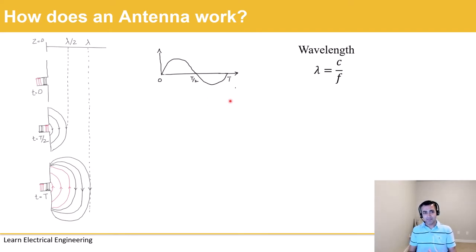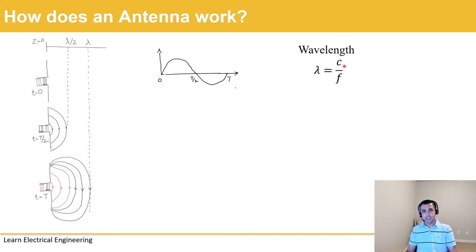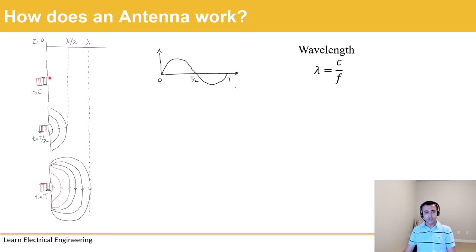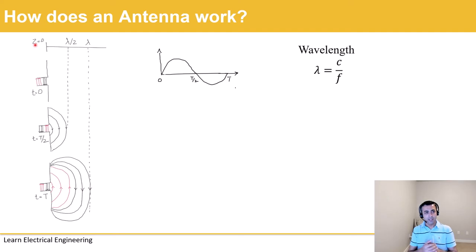A dipole antenna is a pretty common antenna and generally the first antenna you study in any antenna and propagation course. The dipole antenna has two wires, each with a length of a quarter wavelength. Wavelength is the speed of light divided by the frequency — electromagnetic waves travel at the speed of light, so dividing by frequency gives the wavelength in meters. In this example, at time zero, all the electric lines of force exist between the conductors, and the z-axis shown represents the spatial axis based on wavelength — half wavelength here, full wavelength there.